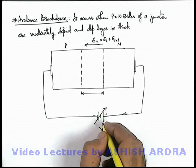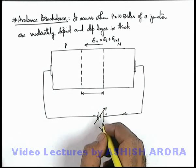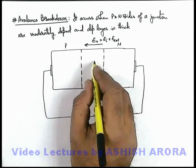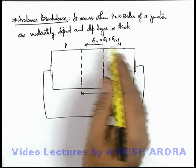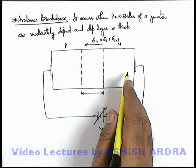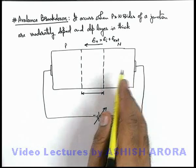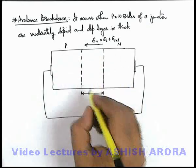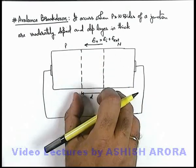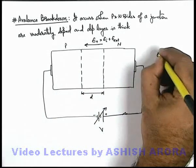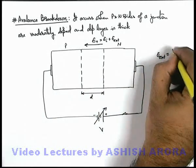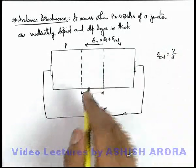Now if we increase the voltage, then we can see in this situation the electric field will also increase but compared to zener breakdown situation it will be relatively less because the width of this depletion layer is large. So here external electric field we can simply write v by d. So in this situation